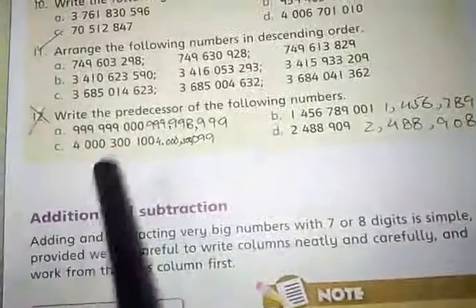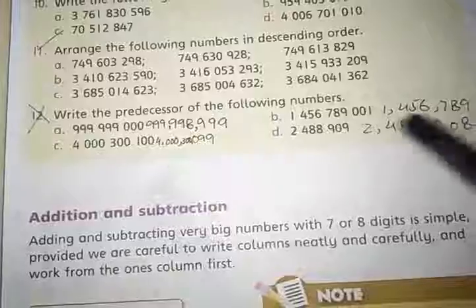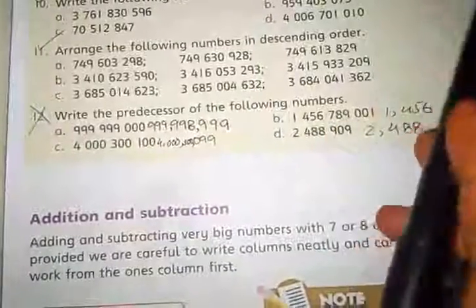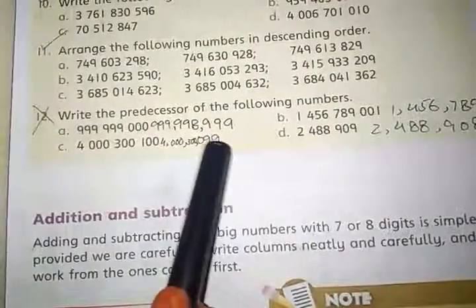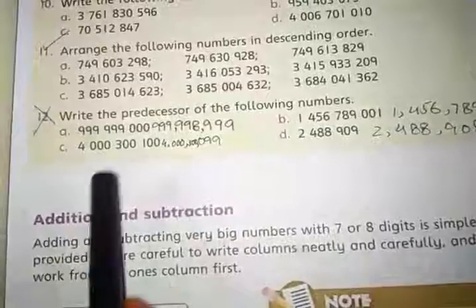Question number 12 is write the predecessor of the following numbers. As we know, the predecessor number is the one number before the given number.